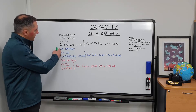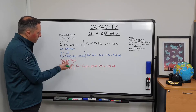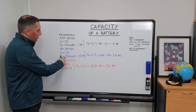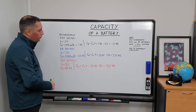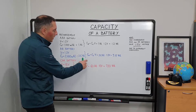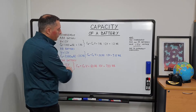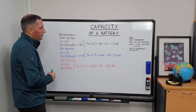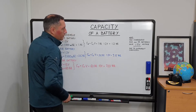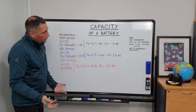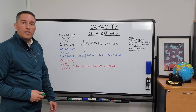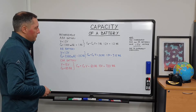Similarly, AA batteries have the same voltage but a larger capacity of 2.6 amp hours. When we calculate the energy stored in an AA battery, we obtain roughly three times more — 3.12 watt hours of energy.